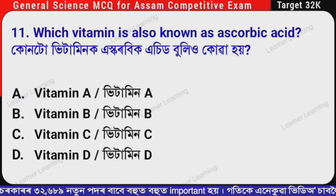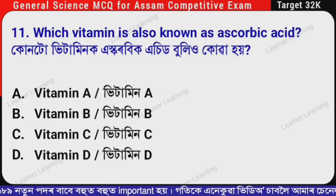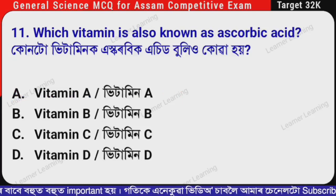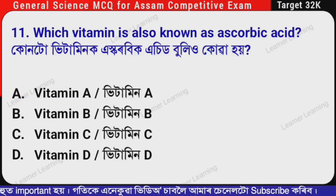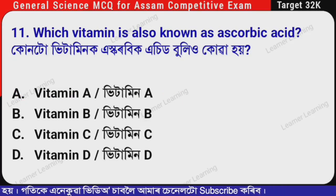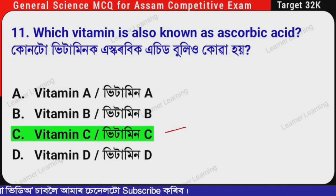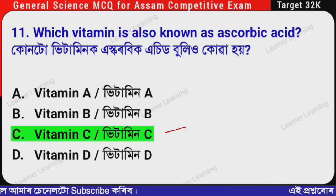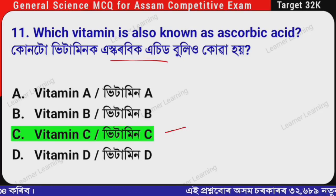Next question: Which vitamin is also known as ascorbic acid? The correct option is Option C — Vitamin C. Vitamin C is also known as ascorbic acid. Remember this.